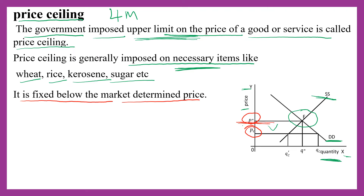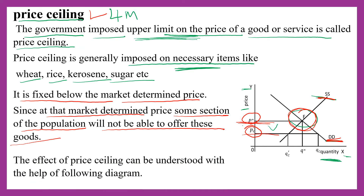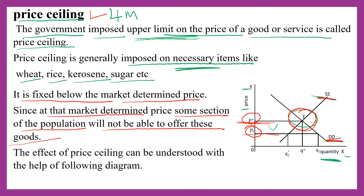P-star is the market-determined price where demand is equal to supply at equilibrium. But price ceiling will be fixed below the market price, since at the market-determined price some section of the population will not be able to afford essential goods. The effect of price ceiling can be understood with the help of the following diagram.